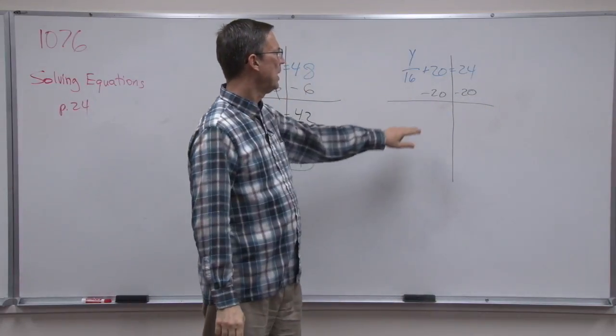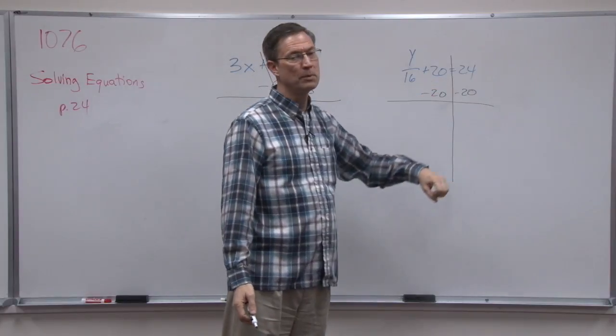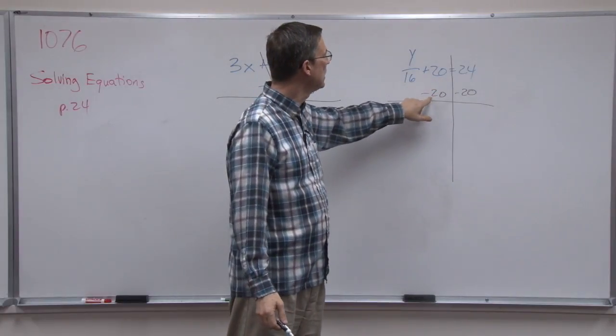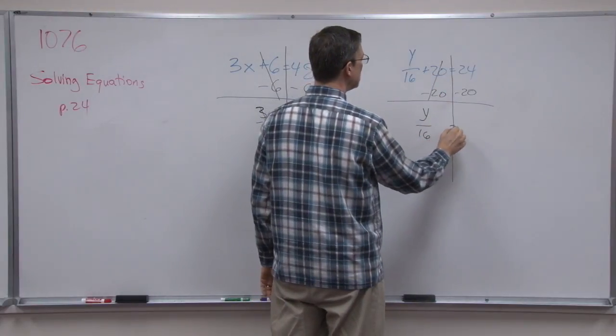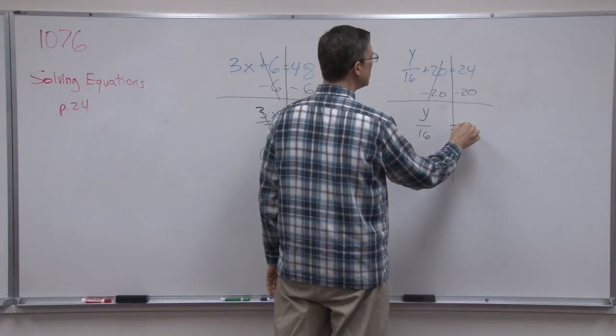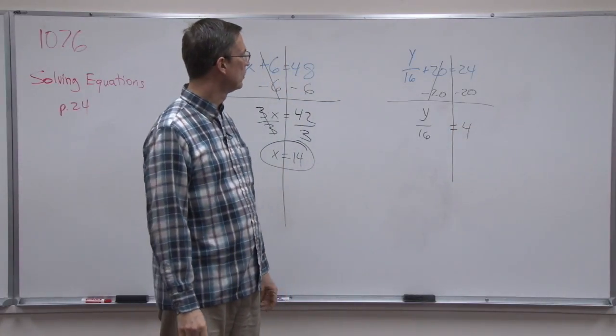I should have chosen one that had a minus here, and then you would see that the opposite of that would be to add 20 to both sides. But since this is adding, we'll do the opposite. So that cancels, and I have y divided by 16 equals 24 minus 20 is 4, okay?